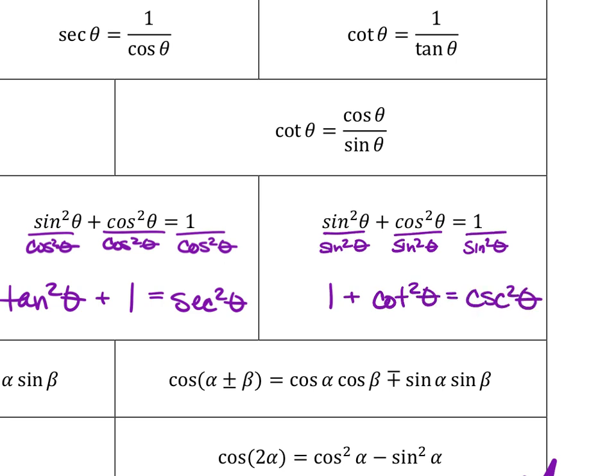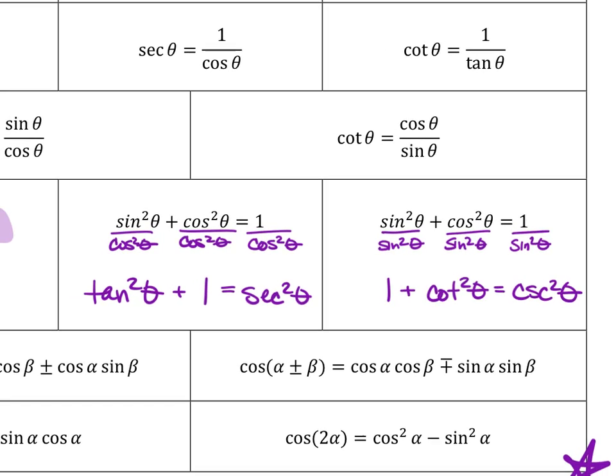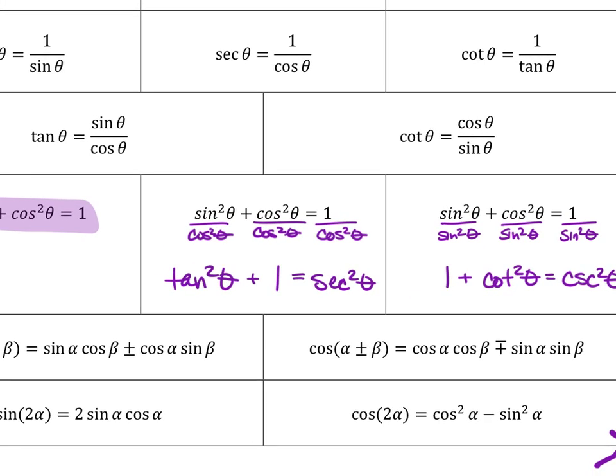And so, boom, I have all three versions. That might be helpful for you in memorizing all three slash nine versions of the Pythagorean identity. You don't have to memorize all nine. You need to memorize one and know how to find the others. But if you're like, I can just memorize stuff, that's great. Memorize it. Know your identities.